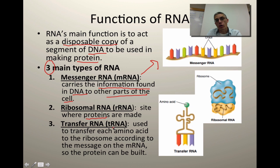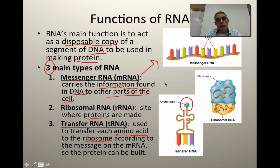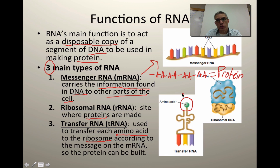The third type is going to be transfer RNA, abbreviated tRNA. This is going to be used to transfer each amino acid to the ribosome as we create that protein. You might wonder why amino acids are important — because proteins, again, it's a polymer, so it's a long chain, and it's going to be made up of lots of little units of amino acids put together to produce that protein. So we need a way to actually transport those amino acids to the ribosome so we can make the protein, and that's what the transfer RNA's job is going to be.